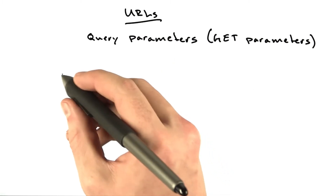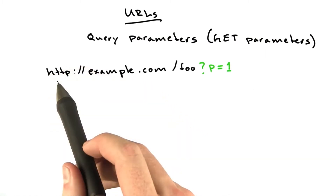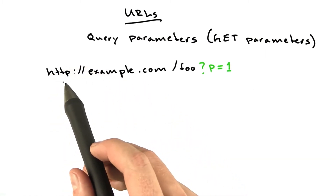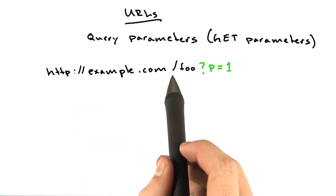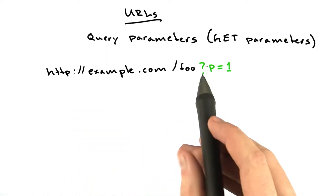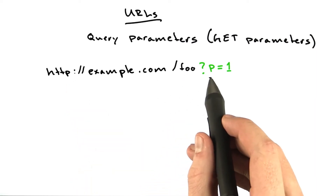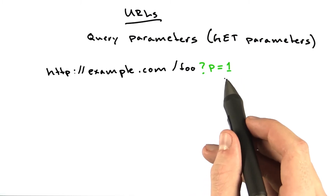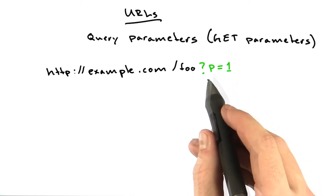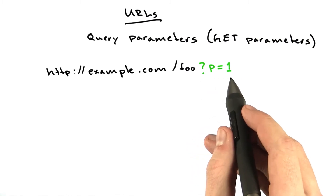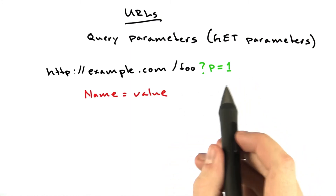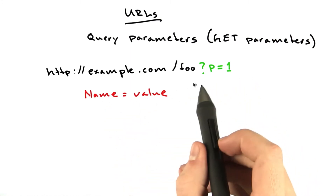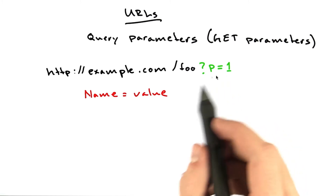Here is an example. We've got our normal URL — the type of simple URL we just discussed — with a simple path, slash foo. And we've added to the end of this a question mark, p equals 1. This adds an extra parameter whose name is p and whose value is 1. The format of a query parameter looks like this: name equals value, or in this case p equals 1.